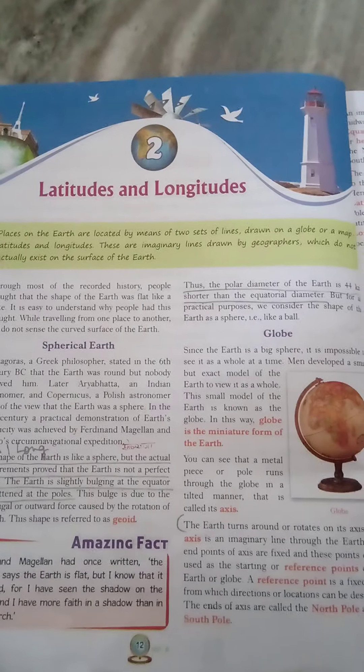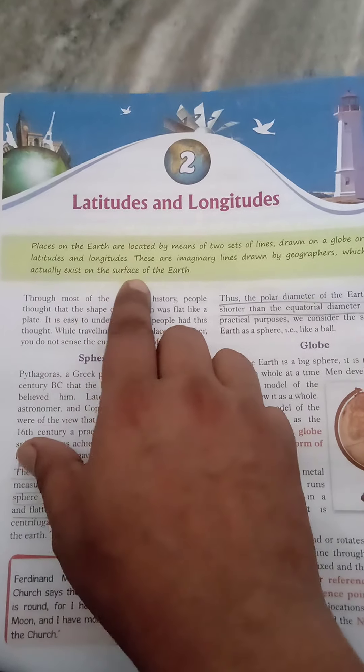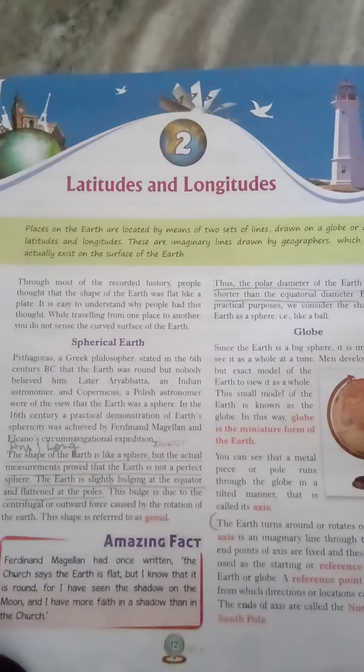These are imaginary lines — kalpnik lines — that do not actually exist on the surface of the earth.